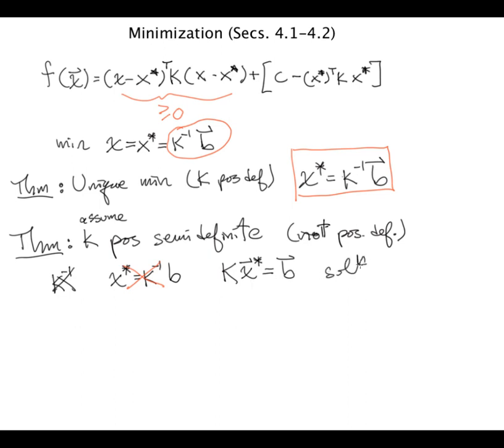On the other hand, you could try and solve this equation k x star is equal to b, even though k is not invertible. This might have a solution. Well, it does if b is in the range of k. So for example, if b was zero, this would always be the case. And in that case, exactly the same thing works, well almost exactly the same thing works. If that holds, then choose x star satisfying k x star is equal to b, and then that gives a minimum, but it's not unique.